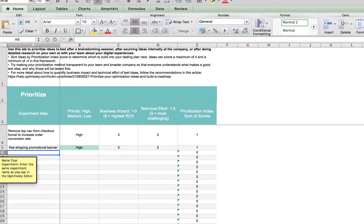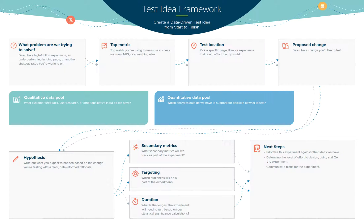To recap: figure out your data and figure out what you're trying to solve for. Is it conversion rate? Is it high bounce rate? And determine those specific KPIs that you want to begin to improve on.